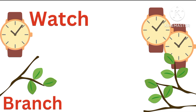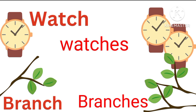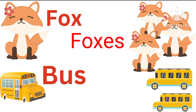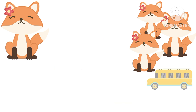Next: watch ends with a CH sound, so it becomes watches. Branch becomes branches. Fox — the plural form of fox is foxes. And bus — the plural form of bus is buses. We already studied in Rule B that X, SS, CH, and SH change to plural form by adding ES.